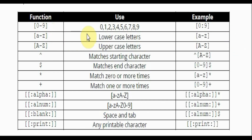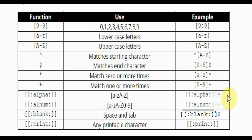Here are some pattern-searching references. Square brackets match a group of characters. Hat (^) and dollar ($) anchor start and end. The asterisk (*) and plus (+) are quantifiers: asterisk matches zero or more times, plus matches one or more times. Double square brackets like [:alpha:] match lower or uppercase letters. [:alnum:] finds all characters including numbers. [:blank:] with dollar matches blank spaces or tabs at the end. [:print:] matches any printable character.